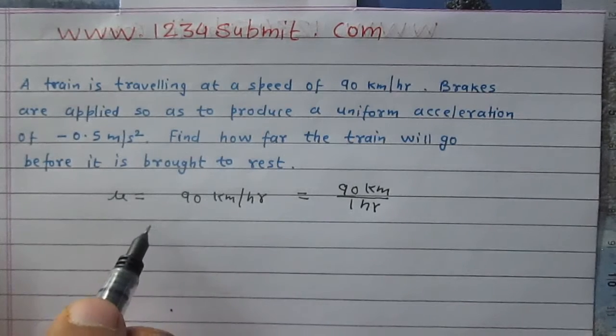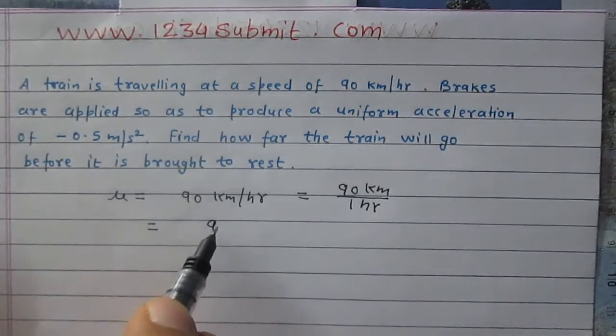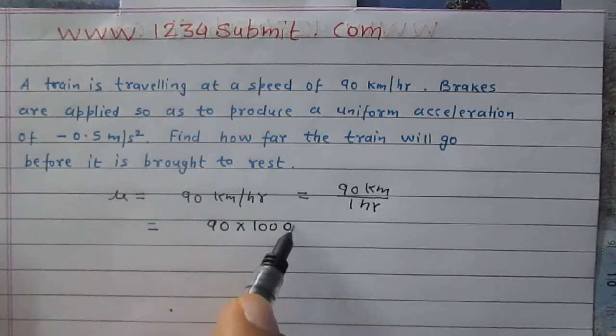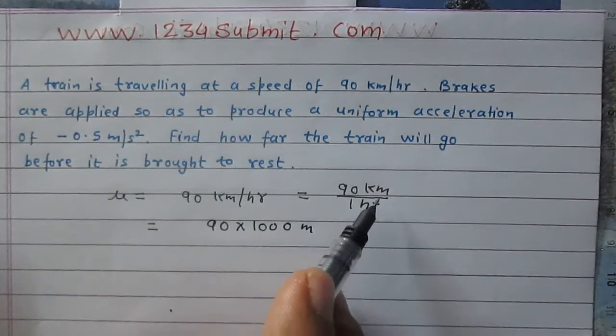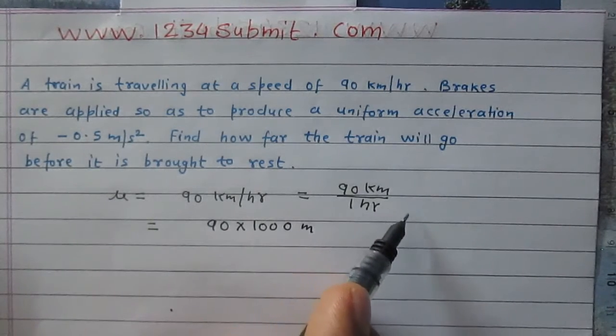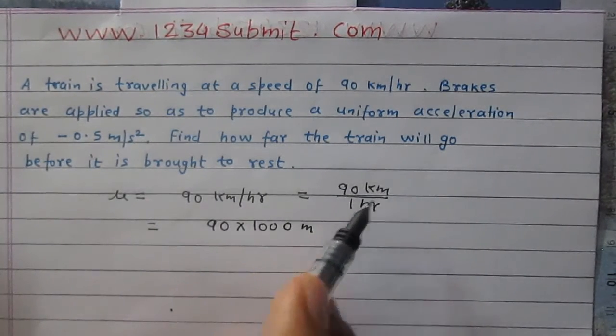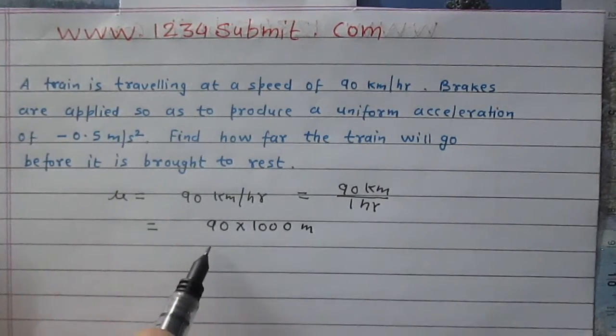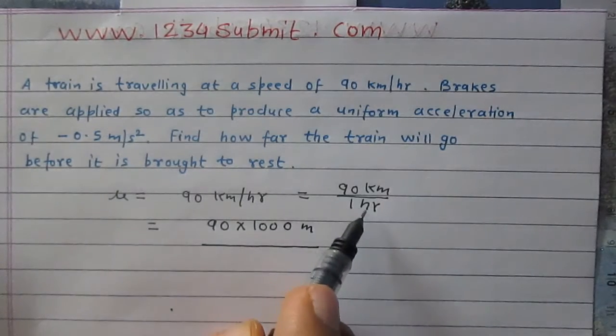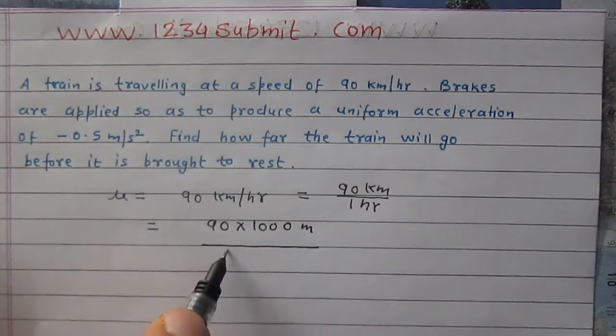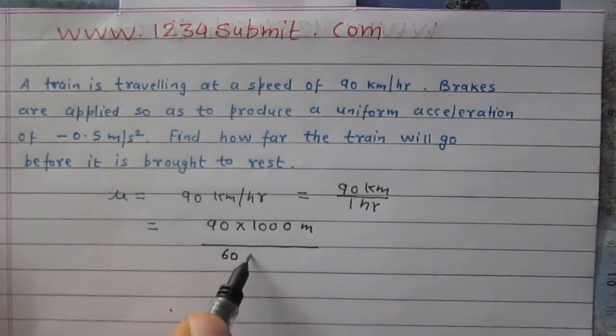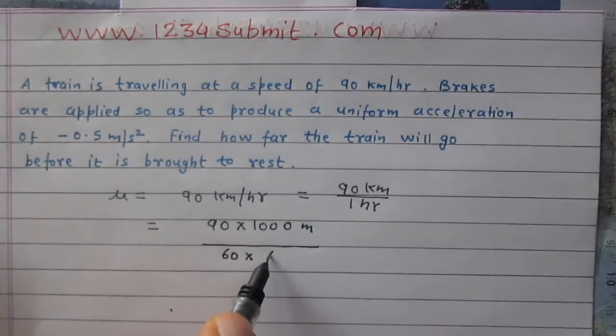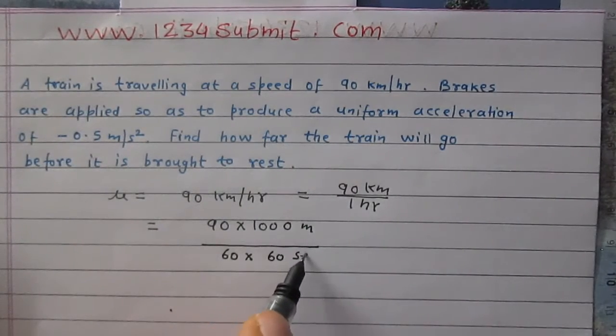The first method is to simply convert 90 km into m as 90 × 1000 m, because in 1 km there are 1000 m. So 90 km is simply 90 × 1000 m. Again, in denominator we have 1 hour. 1 hour is equal to 60 minutes, and further 1 minute is equal to 60 seconds. So 1 hour is totally 60 × 60 seconds.